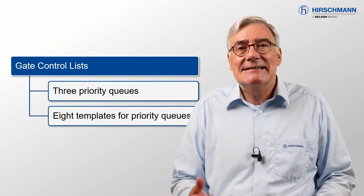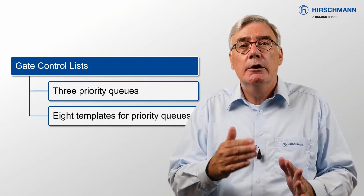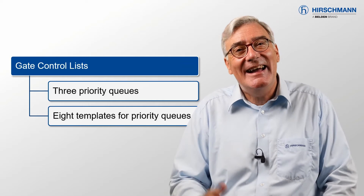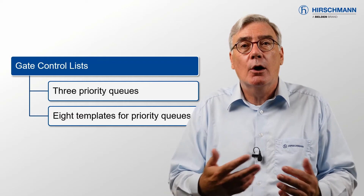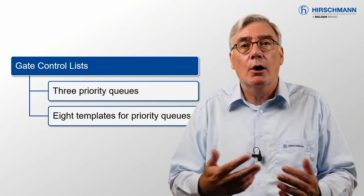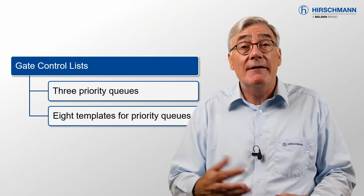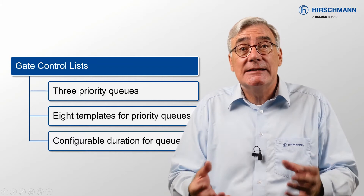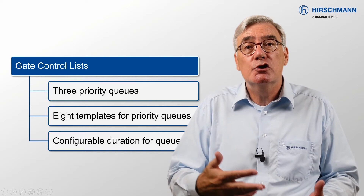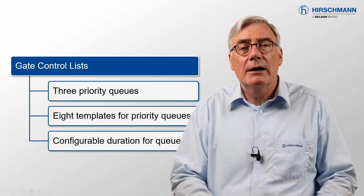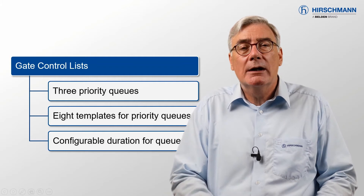The TSN standards allow the time slots, including the buffers between the time slots, to be transmitted in any order. As you can imagine, there are a huge number of combinations. So the Bobcat offers 8 templates which cover the commonly used combinations. This greatly reduces the possibility of a configuration error. But even with the templates, you still have the opportunity to configure the transmission duration for each time slot, giving great flexibility to match your gate control list with your real-world applications.